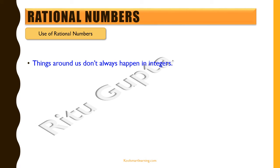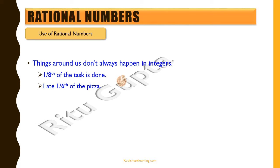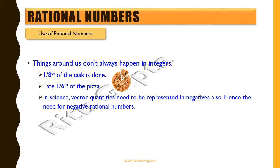Now, why are we studying rational numbers? Why can't we just deal with whole numbers and integers? Things around us do not always happen in integers. Sometimes we say we've done one eighth of a task, or we've had one sixth of a pizza — we don't eat the whole pizza in one go. So we need fractions to describe parts of a whole.